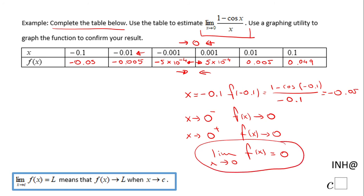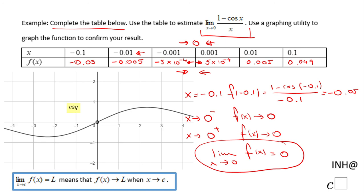Let's take a look at the graph here. This is the graph of 1 minus cosine of x over x. And you notice, once I get closer to 0 from the left side, the function is getting closer to 0. When I get closer to 0 from the right side, the function is getting closer to 0 also.